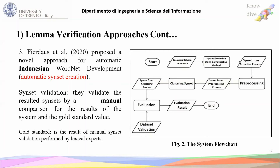The last example in the first category is the work of Fahadden 2020, which proposed an approach for automatic sense creation in the Indonesian WordNet. The focus here is that they use manual evaluation when they get the sense-sets. As seen in the flowchart, they use the Bahasa WordNet, extract lemmas from the dictionary, perform pre-processing, make clusters for these lemmas, and finally when collecting the lemmas in clusters as sense-sets, they evaluate these sense-sets manually with a comparison against a gold standard value.